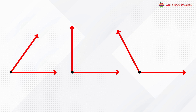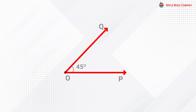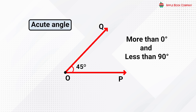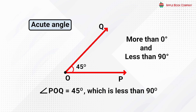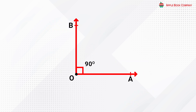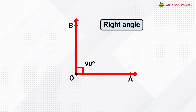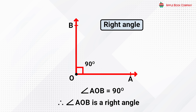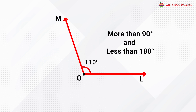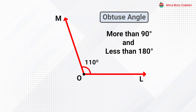Classification of angles: on the basis of measurement, angles can be classified as follows. Acute angle: an angle whose measure is more than 0 degrees and less than 90 degrees. In the given figure, angle POQ is equal to 45 degrees, which is less than 90 degrees; therefore angle POQ is an acute angle. Right angle: an angle whose measure is exactly 90 degrees. An obtuse angle is one whose measure is more than 90 degrees and less than 180 degrees.